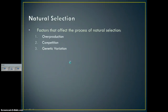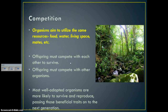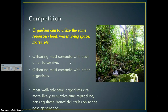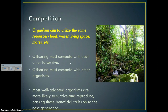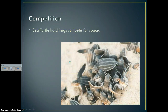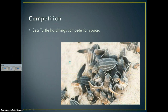Competition is organisms aiming to utilize the same resources — things like food, water, living space, and mates. Offspring must compete with each other in order to survive. Because of competition, the most well-adapted organisms are the ones that survive in that environment, making them more likely to reproduce and pass those beneficial traits to future generations. Back to the sea turtle hatchlings — they're competing right from the beginning, competing for space and competing for nutrients.